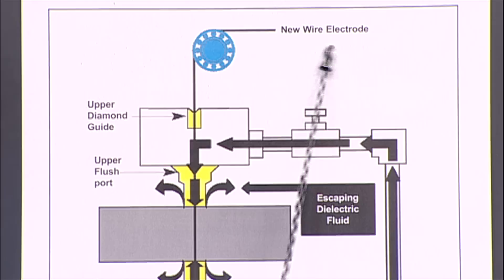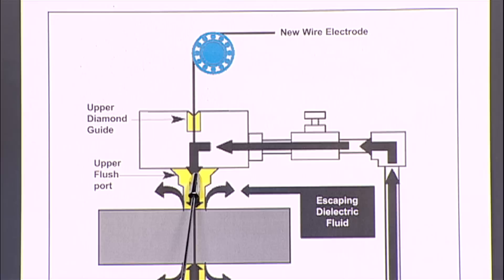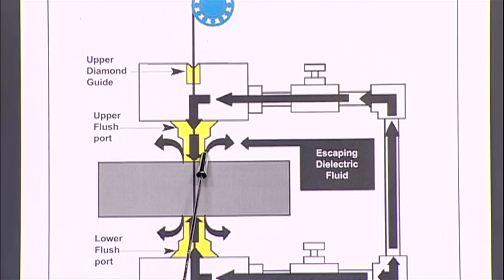We start over here with a new wire electrode. There's a pulley over here and it comes through and here's an upper diamond guide. Then the wire goes through this flush port.